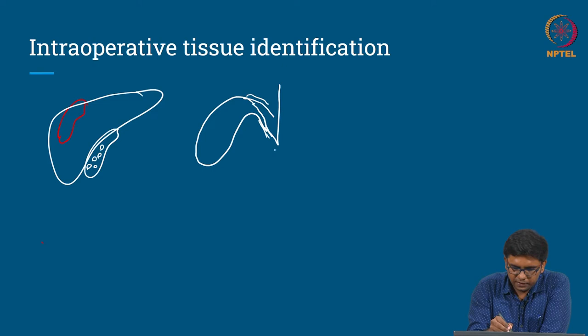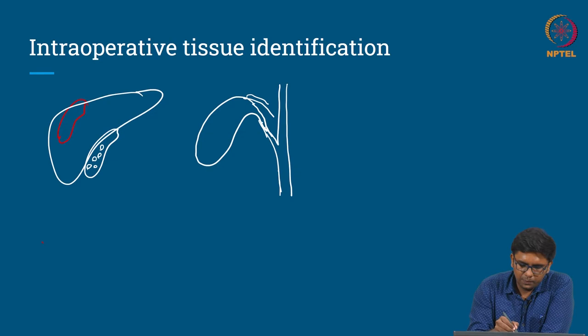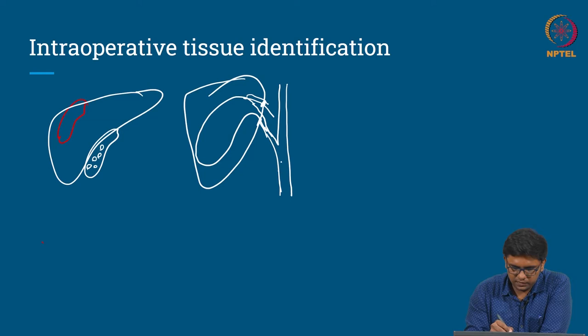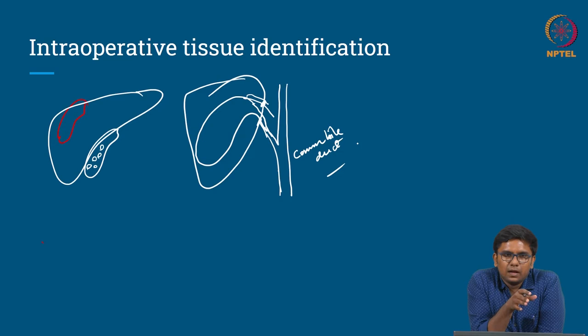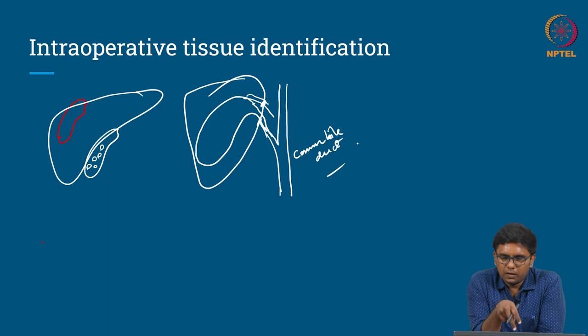To remove the gallbladder, you need to clip and disconnect it from the cystic duct and cystic artery. You are not supposed to interfere with the common bile duct. If an injury happens to the common bile duct by mistake and is identified during surgery, it is correctable. But if it is identified only in the post-operative period, it is a catastrophic event. We can use artificial intelligence and machine learning to help the surgeon correctly identify whether he is going near the bile duct or not.